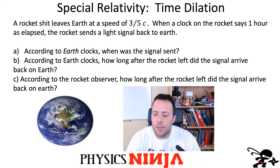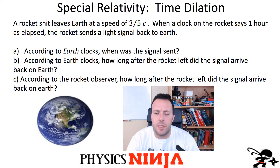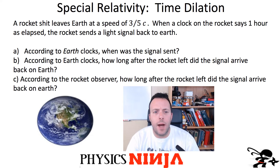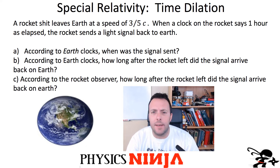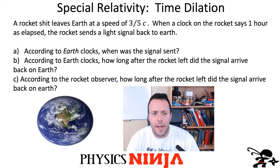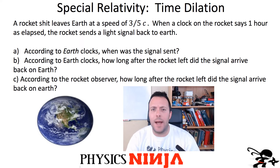Hi everybody. Today I'd like to do a practice problem on special relativity, and more specifically on time dilation. Here's the problem: a rocket leaves Earth at a speed of three-fifths the speed of light. When the clock on the rocket says one hour has elapsed, the rocket sends a signal back to Earth.